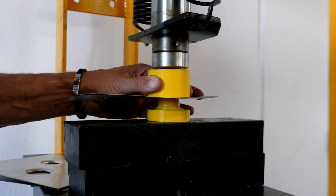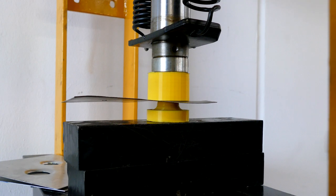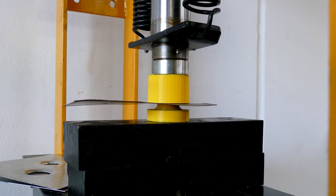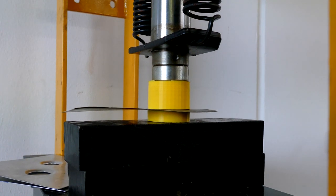The 3D printed dimple dies can also be used for steel sheets up to 1.2mm. The procedure here is the same as for aluminum. Only more pressure has to be applied.